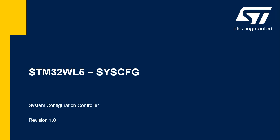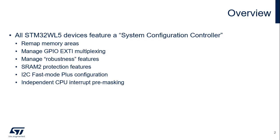Hello and welcome to this presentation of the System Configuration Controller. STM32WL5 devices feature a set of configuration registers. The System Configuration Controller gives access to the following features: remapping memory areas to Cortex-M4 address 0, multiplexing GPIOs to the internal interconnect EXTI signals, certain robustness features, SRAM2 write protection and erase, the configuration of the 20mA high-drive IOs used for the I2C Fast Mode Plus, and peripheral interrupt pre-masking for the two CPUs.